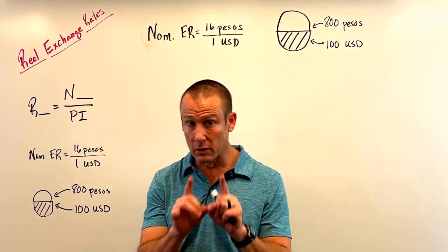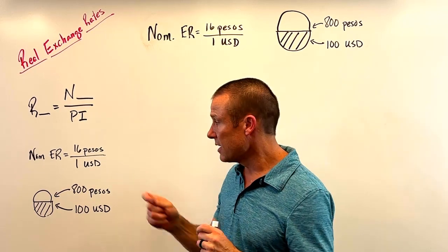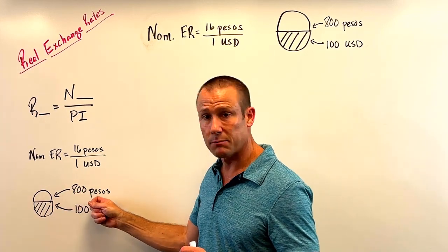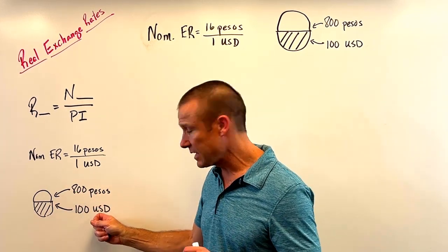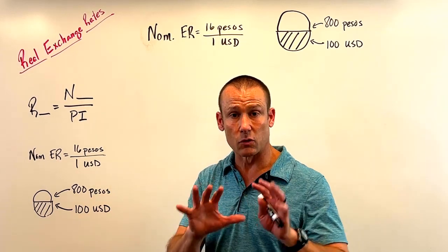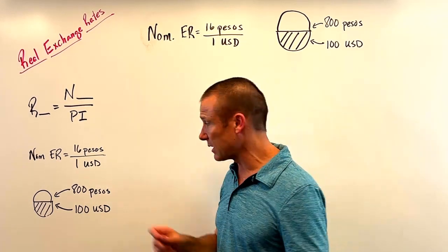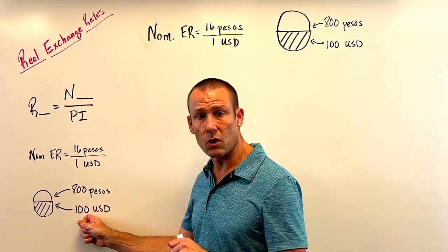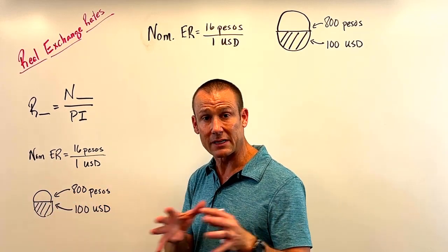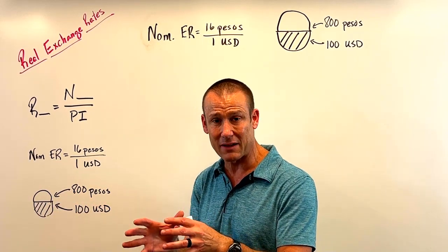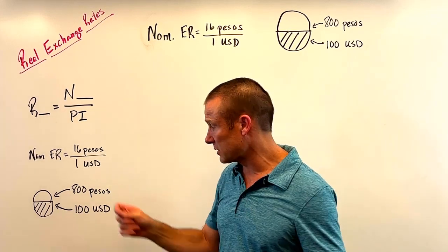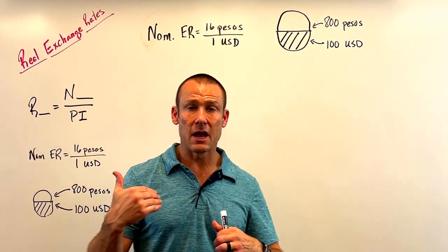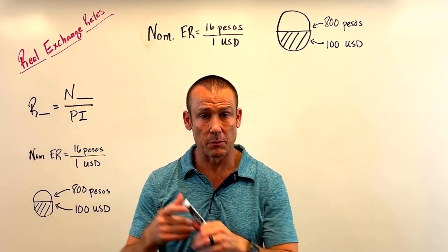When you find the real exchange rate, it's really important to understand that you need the nominal exchange rate and a market basket priced in both pesos — the foreign currency — and USD — the domestic currency. To find the real exchange rate, I need to know the nominal exchange rate, how much a market basket in the United States costs in USD, and how much that same market basket in Mexico costs in pesos.